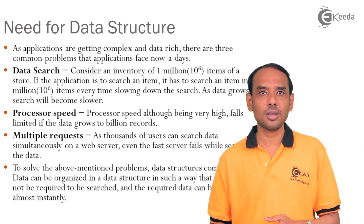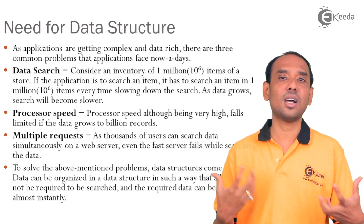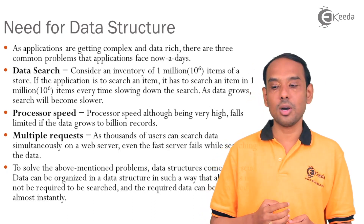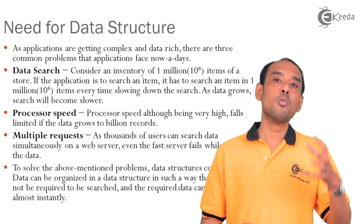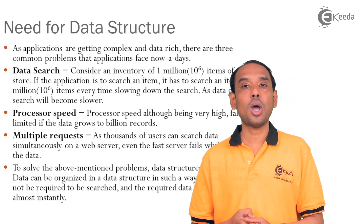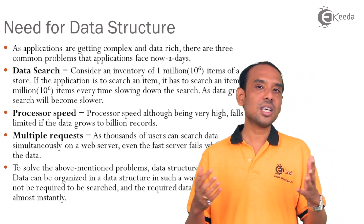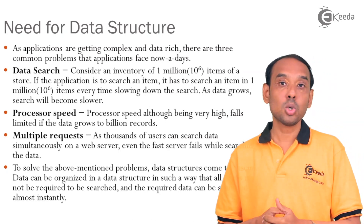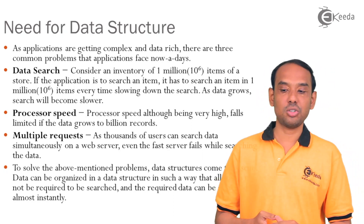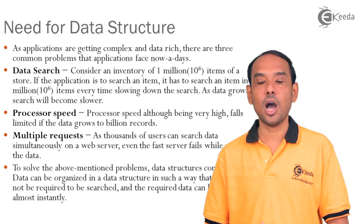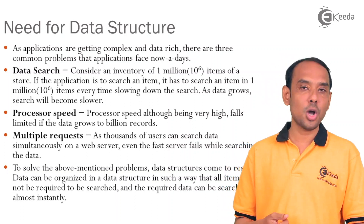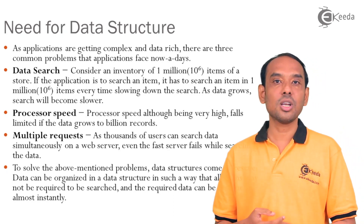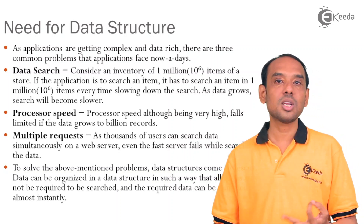The third problem is multiple requests. Take the example of Google — millions of users are continuously searching for information on web servers, so multiple requests must be handled simultaneously. Your computers cannot handle this data alone, and even the fastest server will fail if it is not able to handle multiple requests at the same time. These are the three basic problems: data search, processor speed, and multiple requests. The solution to these problems is data structure.